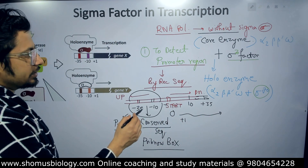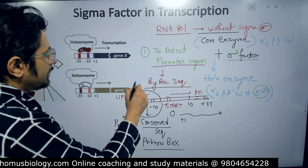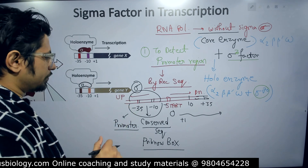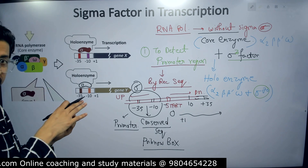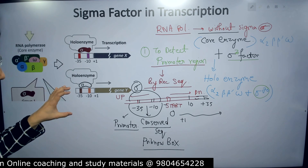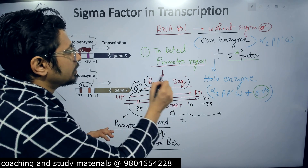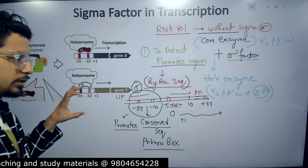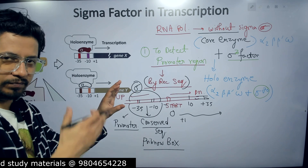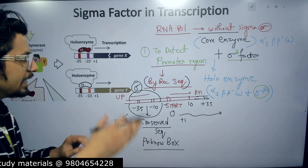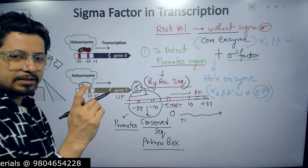The polymerase will bind to this region with the sigma factor, because the sigma factor helps in recognizing the promoter. The polymerase may initially bind further upstream — around minus 100 or minus 200 — then starts to scan for the specific sequence. The moment it finds the sequence between minus 35 and minus 10, it stops. The presence of the sigma factor helps in this recognition and interaction.